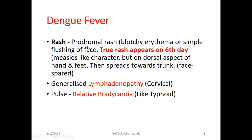Rash: the prodromal rash is a blotchy erythema — red color or simple flushing of the face. The true rash appears on the sixth day with a measles-like character, appearing on the dorsal aspect of the hands and feet, then spreading toward the trunk. Importantly, there will be no rash on the face — the face is spared.